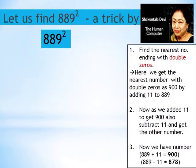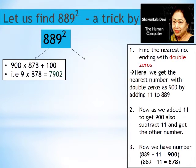From here our solution has two parts. In part 1, we multiply the numbers 900 and 878 and divide it by 100. That is 9 into 878, that is 7902.